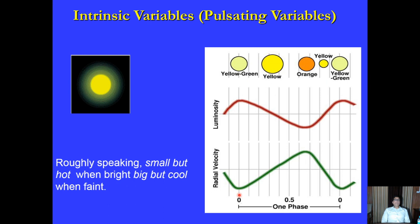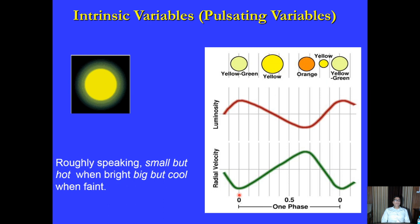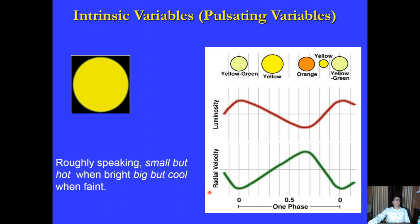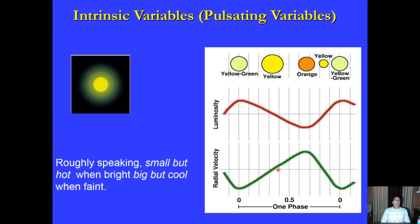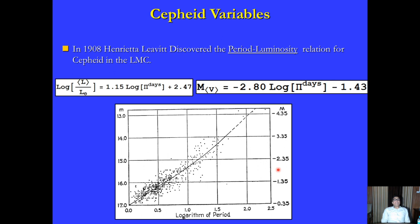Light variation can be detected using two techniques: photometry, which measures the change in brightness, and spectroscopy, which measures how the radial velocity changes with time using the Doppler shift — since the star is expanding and contracting, we see changes in radial velocity. When a star contracts it becomes hotter and its luminosity increases proportional to T to the fourth power; when it expands it cools. Cepheids are standard candles — detecting any Cepheid in a galaxy allows us to determine that galaxy's distance.